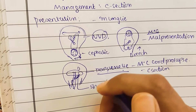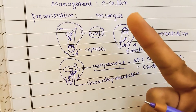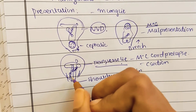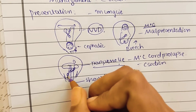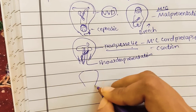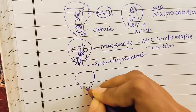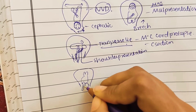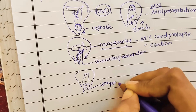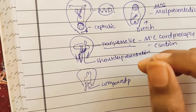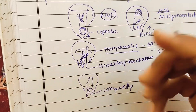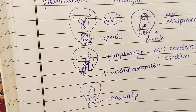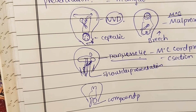If vaginal delivery is attempted in transverse lie, there is a chance of hand prolapse. Compound presentation is when two parts of the body occupy the lower part of the uterus simultaneously - for example, the head comes down along with a hand or leg. This is called compound presentation because more than one part of the baby is presenting, such as head with hand or head with leg.